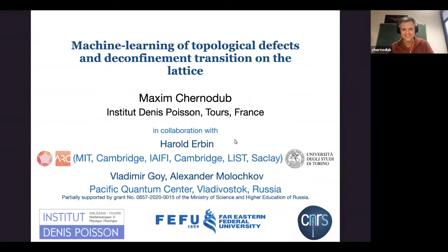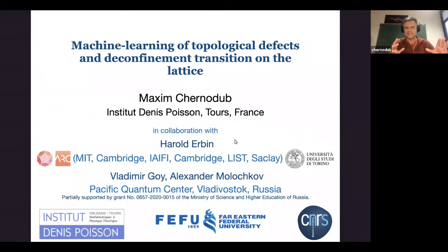I will be talking about machine learning of topological defects — some very specific directions in theory. The idea was suggested that we are uniting mathematics with physics, and now we deviate towards computer science, to give you some flavor of how machine learning is applied to physics. I would like to say that it's a very small aspect of what people are doing in physics.